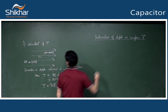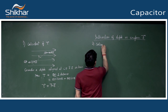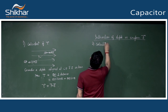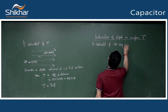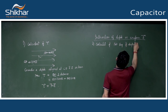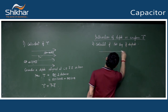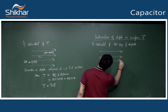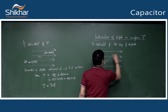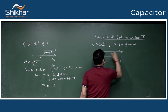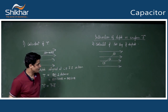This completes the proof of torque. Now calculation of potential energy of dipole in uniform electric field. The figure shows the dipole at angle theta with the field.